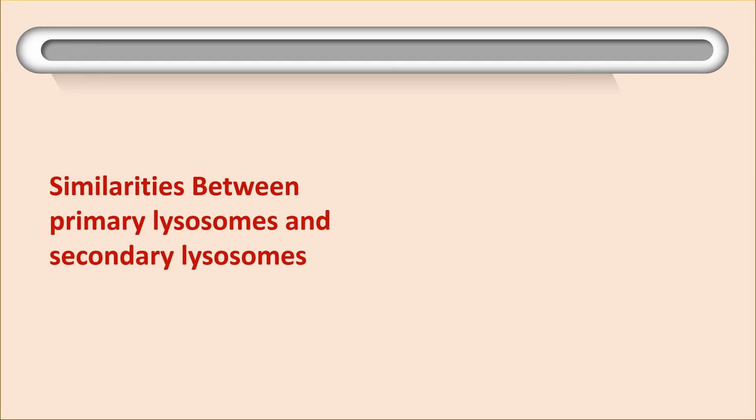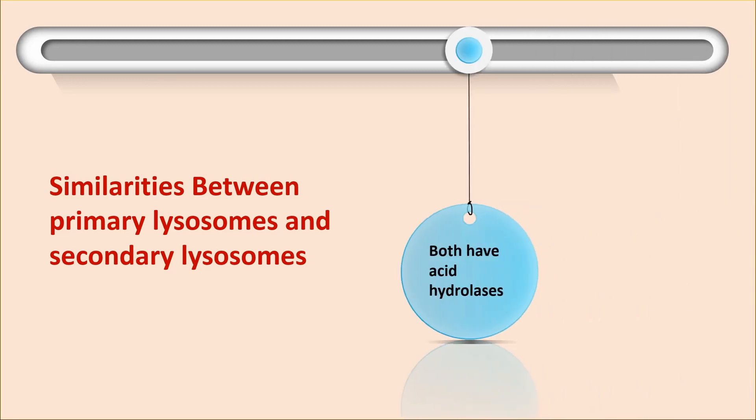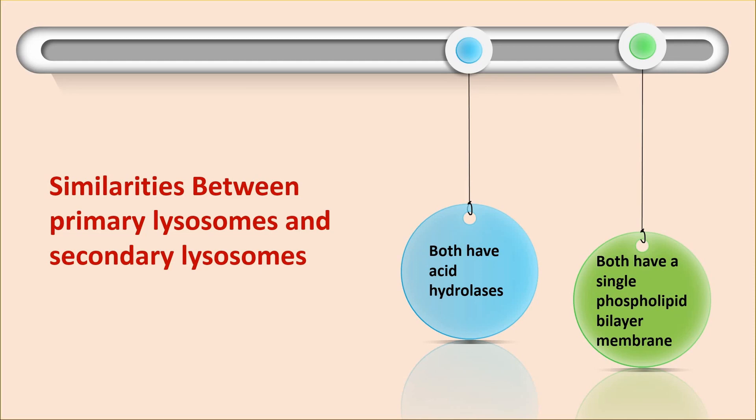Similarities between primary and secondary lysosomes: Both have acid hydrolases. Both have a single phospholipid bilayer membrane. Lysosome formation.